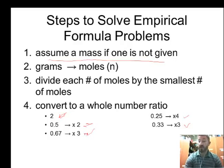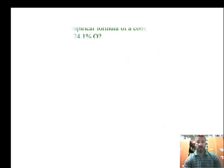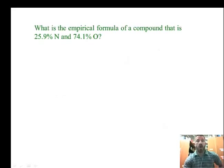Also, you'll need to do an empirical formula with the magnesium and oxygen percentages that you found in the lab, which you did on Tuesday. So here's our first problem. What is the empirical formula of a compound that is 25.9% nitrogen and 74.1% oxygen?